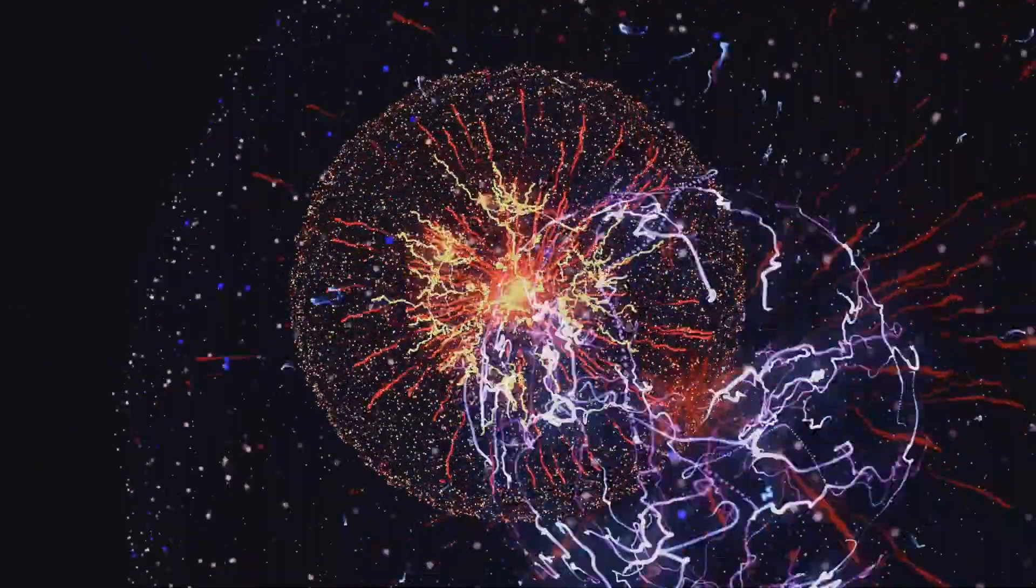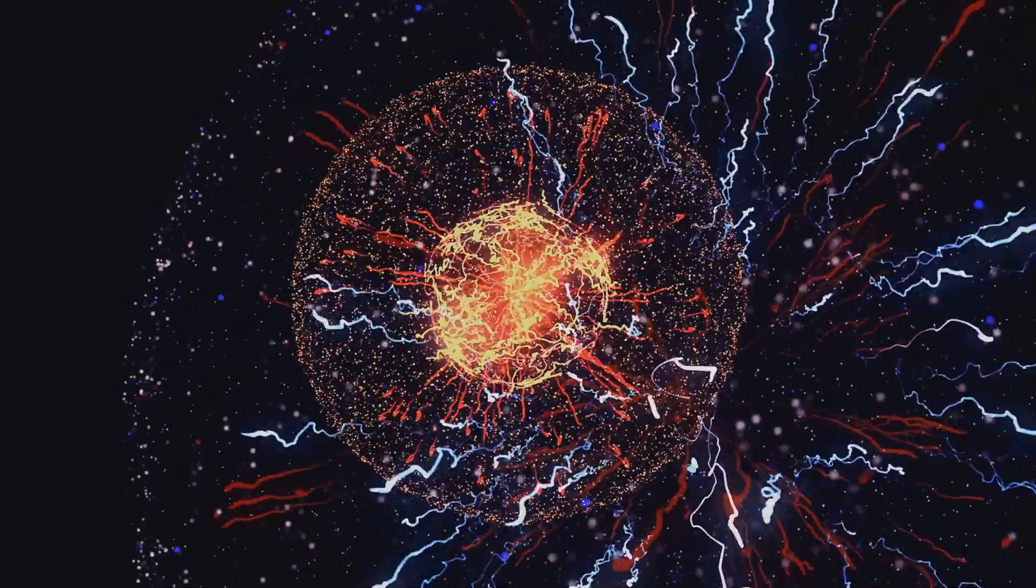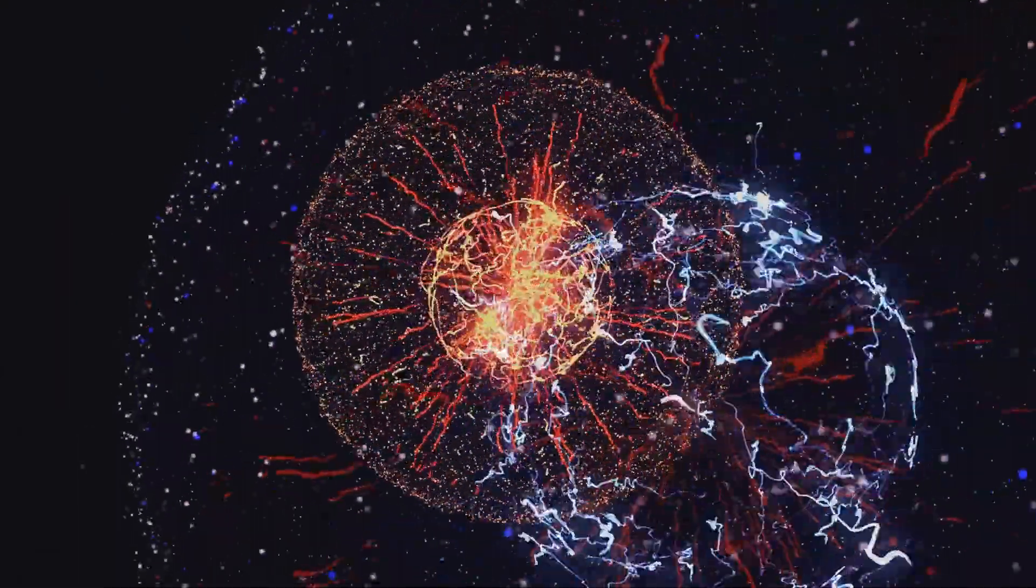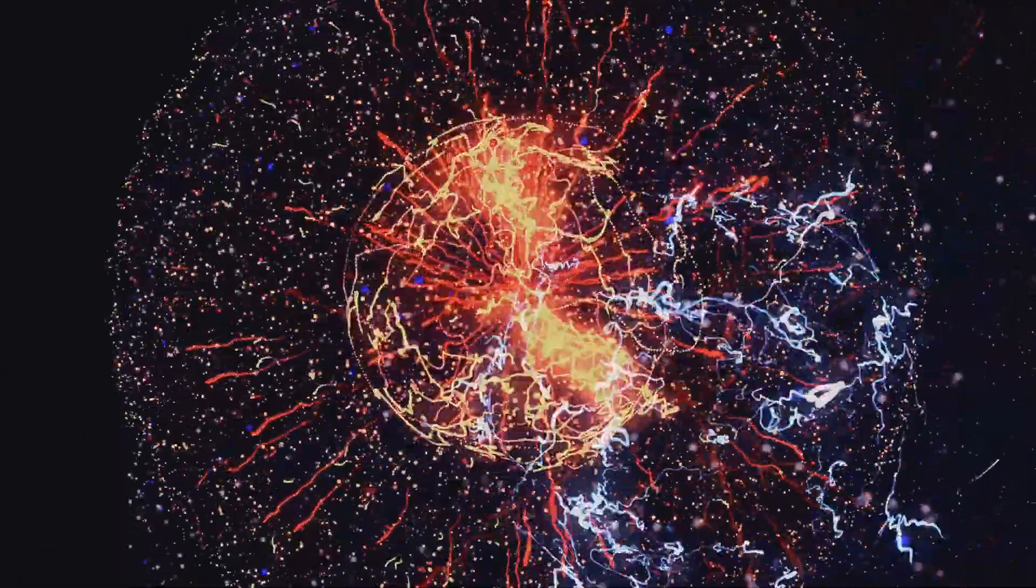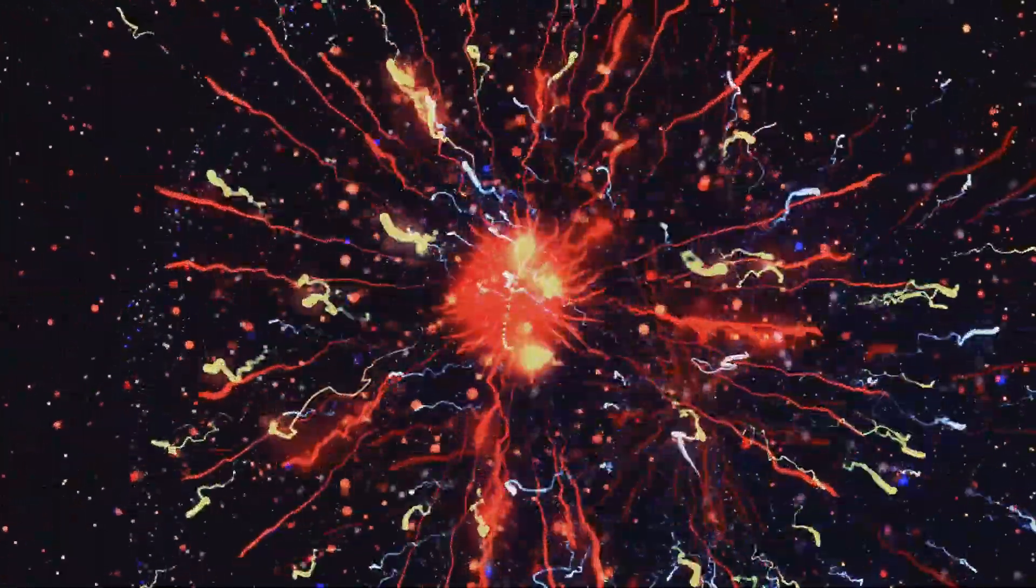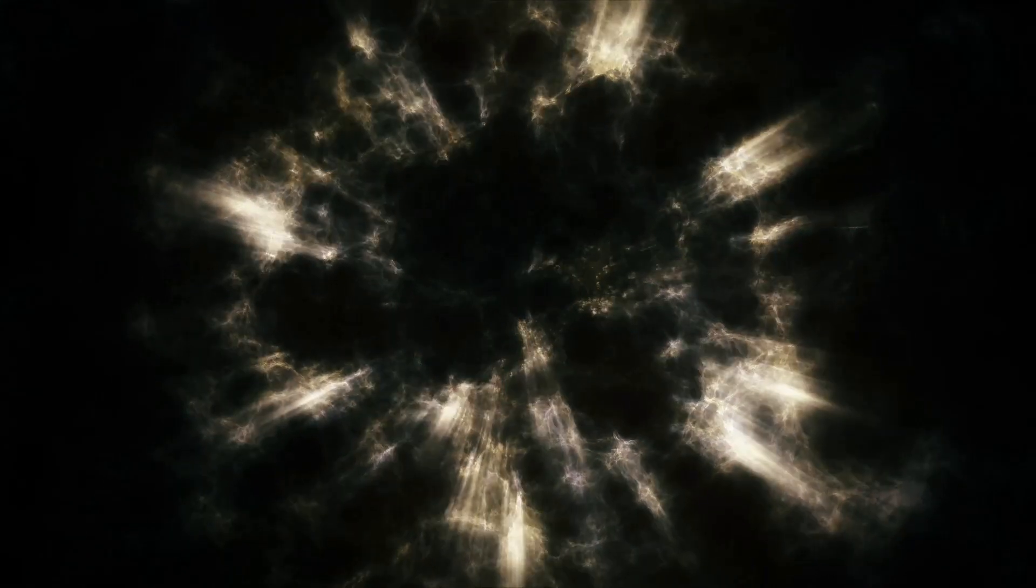Finally, there's the Big Rip. This theory depends on a type of dark energy called phantom energy. If phantom energy exists and increases over time, it could overpower gravity, causing the universe to expand at an ever-accelerating rate. Eventually, this expansion would become so intense that galaxies, stars, planets, and even atoms would be torn apart.